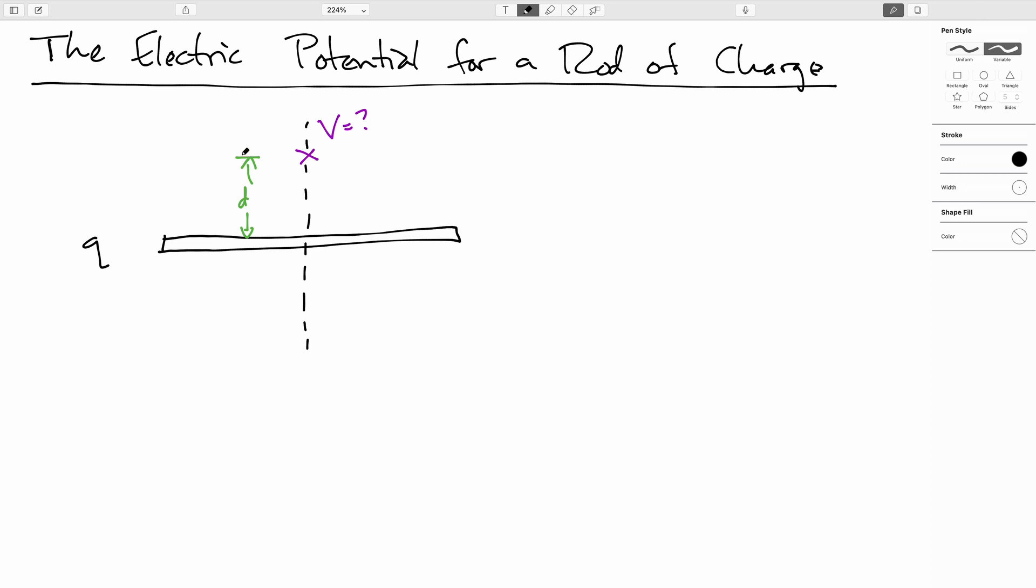And we'll say that the distance that we are away from the rod is D. And so the way we go about finding this is we will, again, look at a small chunk of charge right here, DQ. And we'll have to express it in terms of something that we can integrate over. So we'll say that the width of this is DX.